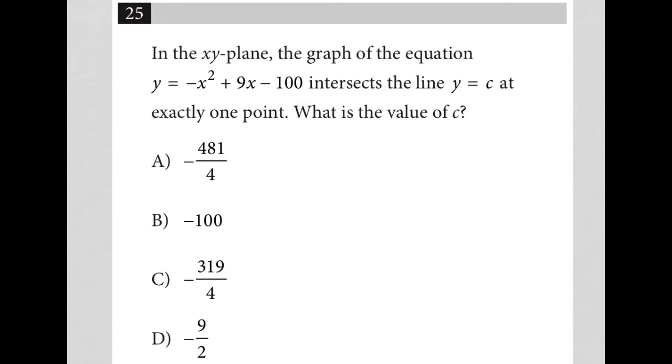So this question says, in the xy plane, the graph of the equation y equals negative x squared plus 9x minus 100 intersects the line y equals c at exactly one point. What is the value of c?